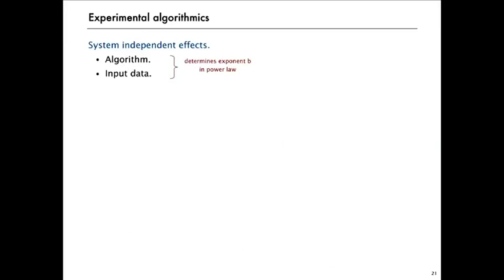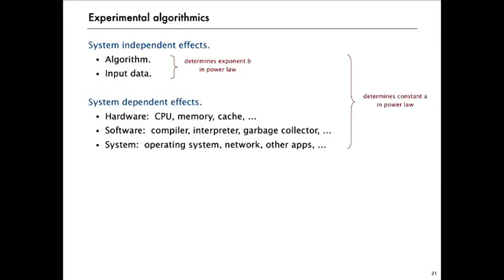Okay, so there's a lot of effects in trying to understand the running time of a program on your machine. So key effects are independent of what computer it is. And that's the algorithm you're using and what's the data. And that's going to really determine the exponent in the power law. And then there's a lot of system dependent effects. What kind of hardware do you have? Do you have a fast computer or a slow one? What kind of software? What's going on in your computer? All of those things really determine the constant A in the power law.